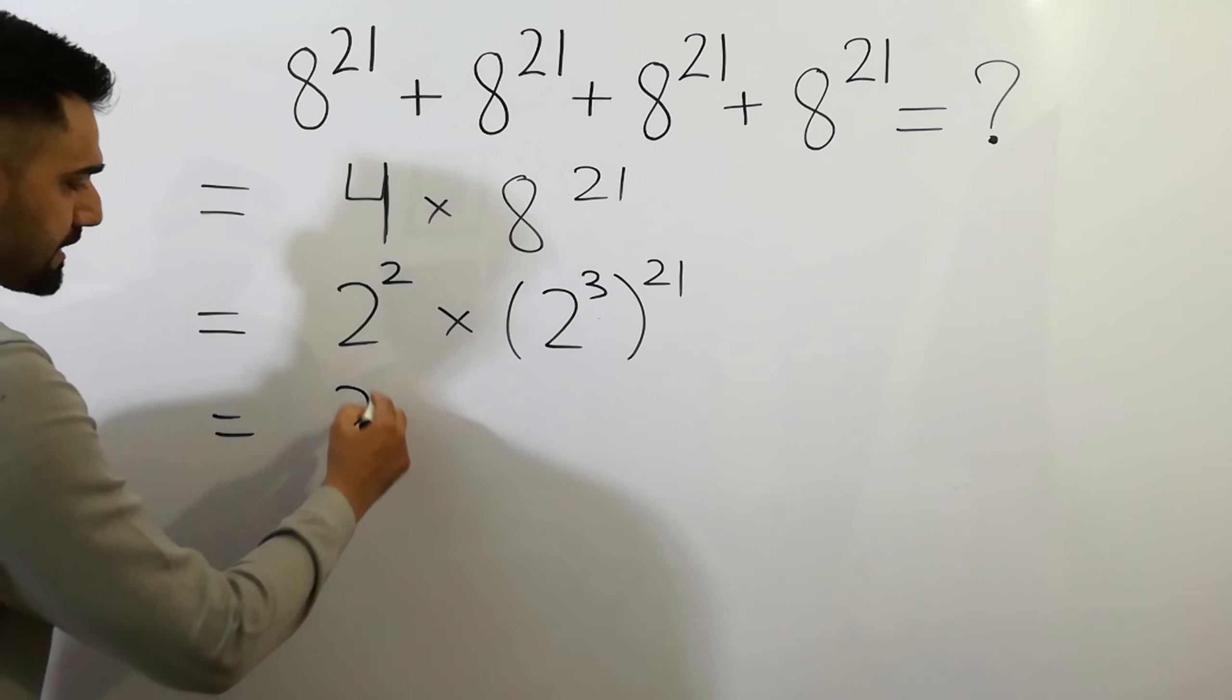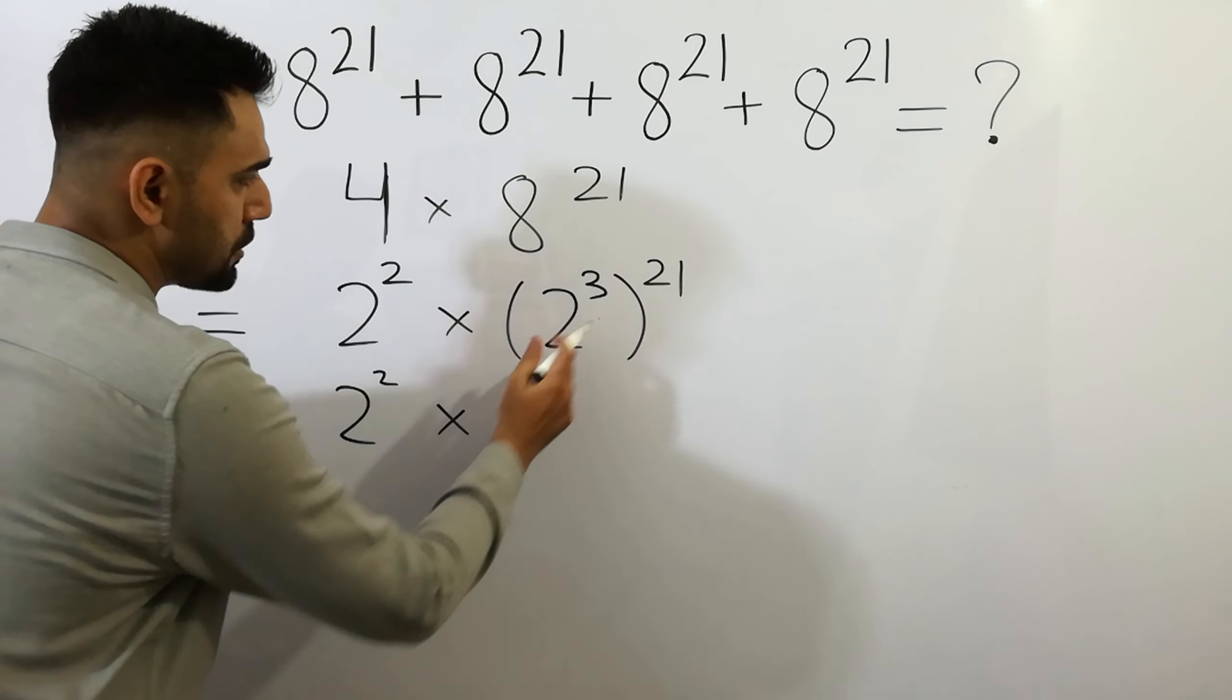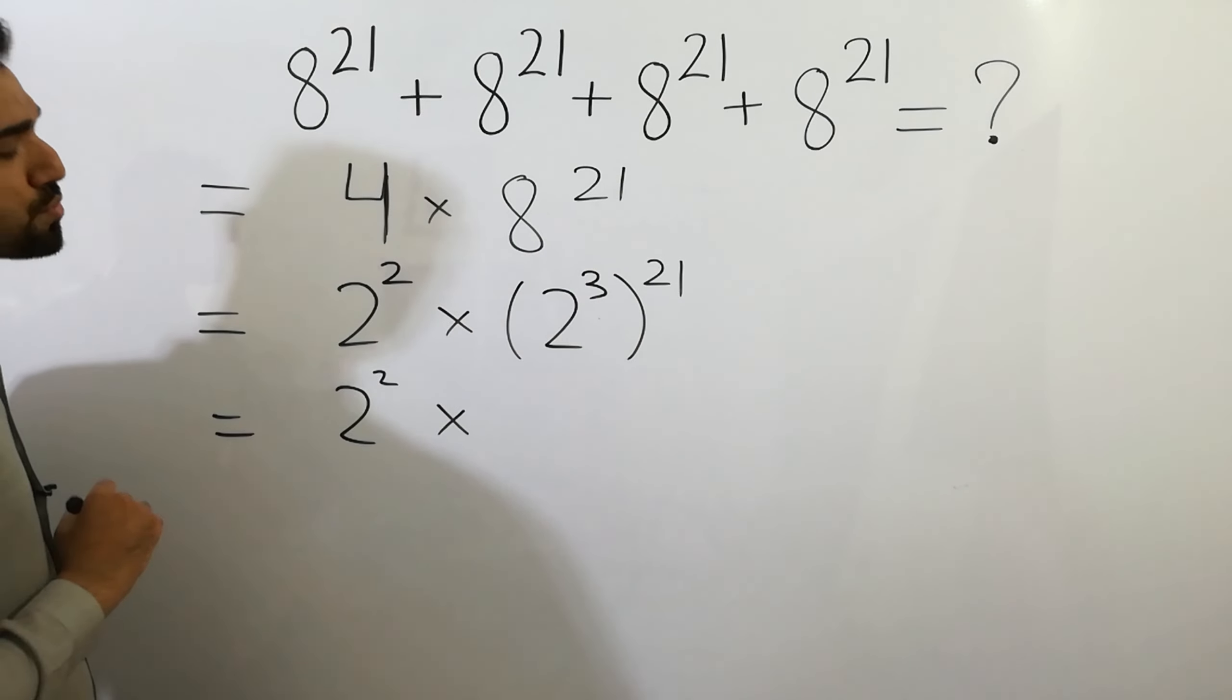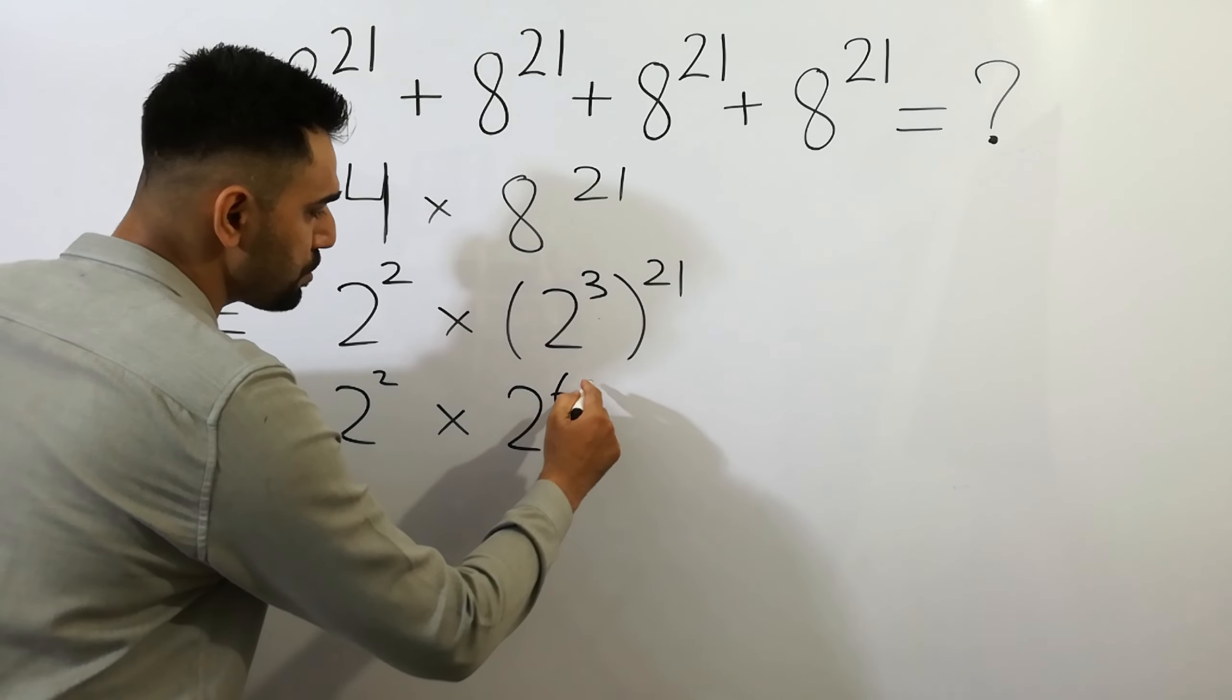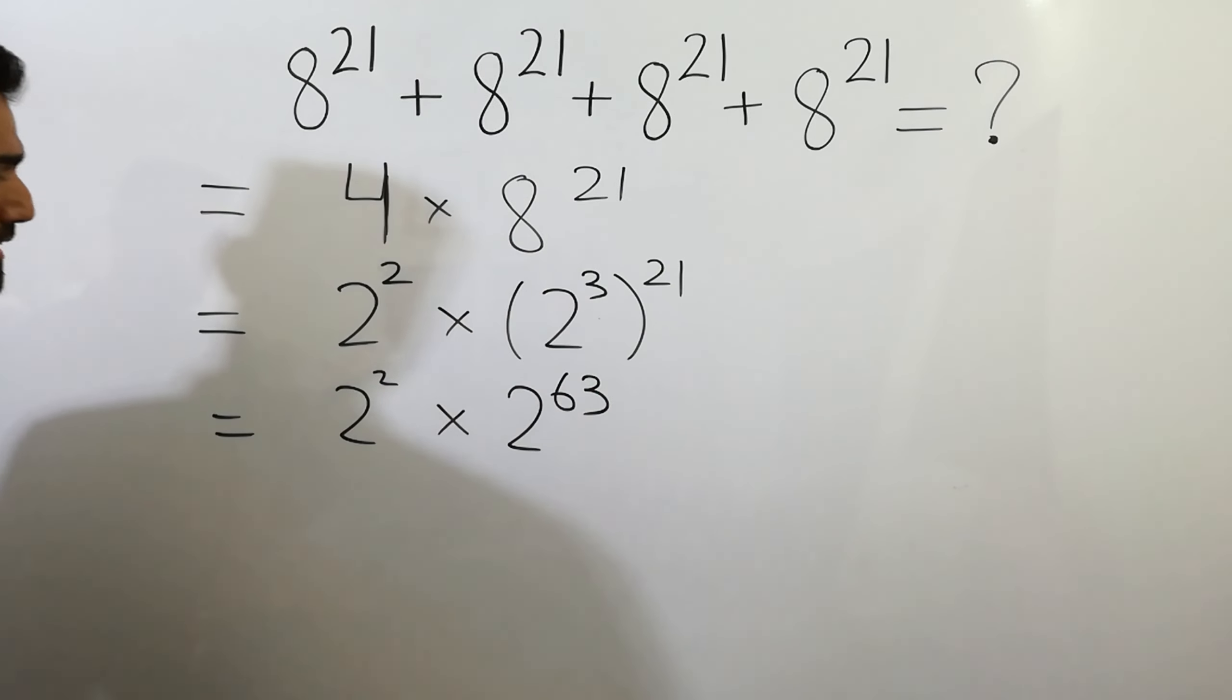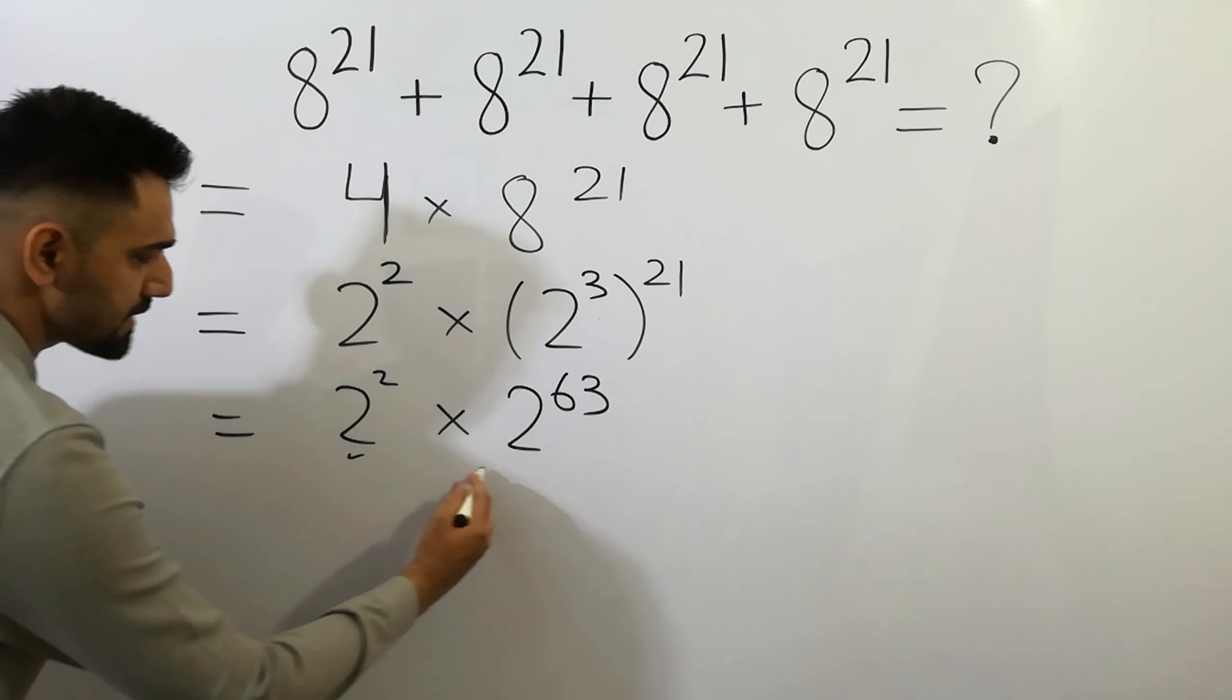2 squared times 21 times 3 equals 63. We can write 2 to the power 63. Since the bases are the same,